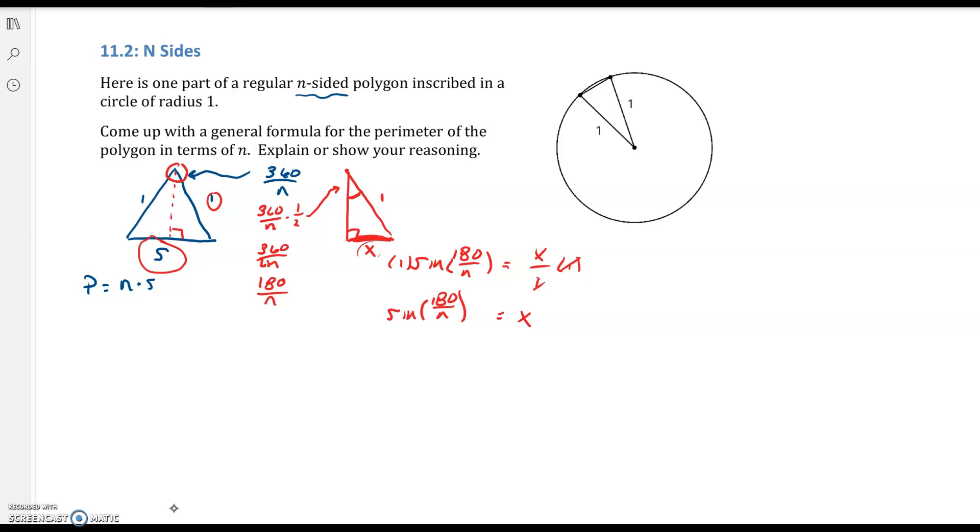So my S now is going to be - I know the perimeter is the number of sides. My S is 2 of these things, so it's 2 times sine of 180 over N.